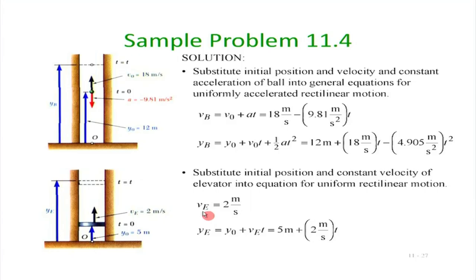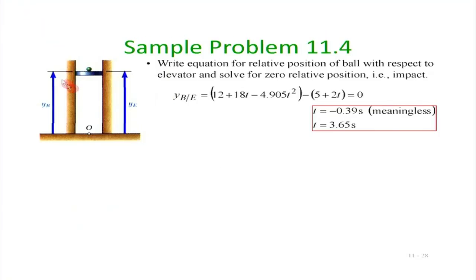First we find, from a fixed frame O, the position and velocity of the ball as a function of time using the equations of uniformly accelerated motion — this is what we did earlier. We also find the velocity of the elevator (2 m/s upward) and its displacement y_e as a function of time. We then compute the relative position: y_{B/E} = y_B − y_E, and set this equal to 0 to find when the ball hits the elevator. Solving the resulting quadratic gives two times; the negative time is a reversal with no physical meaning, and t = 3.65 seconds is the time of impact.